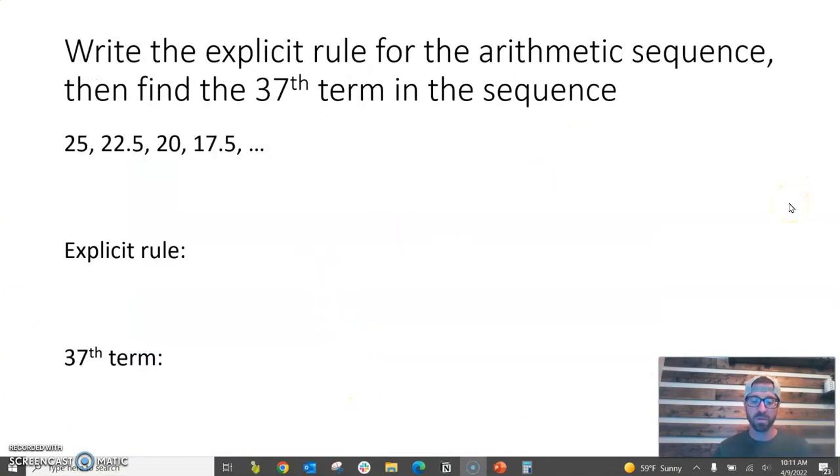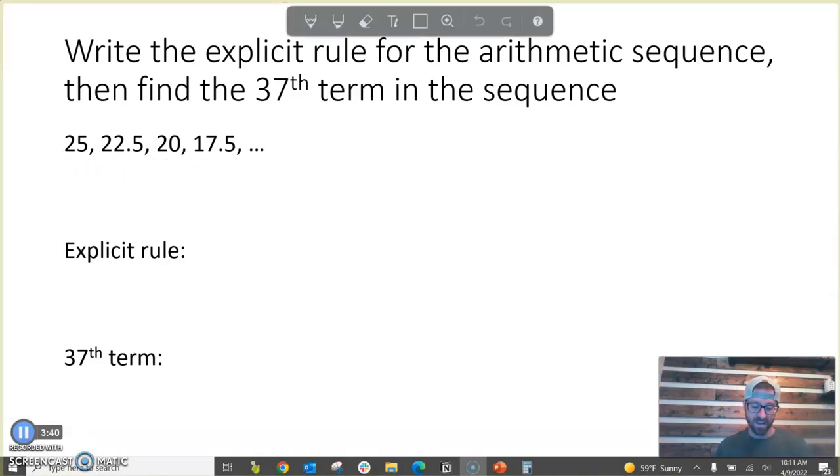So, we're going to use the explicit rule or we're going to write the explicit rule and then find the 37th term in the sequence. Well, if we look at our sequence right here, this is an arithmetic sequence. It looks like it's going down by 2.5 every time. And so, what we learned on our last slide is that to find our explicit rule, we start with our first term plus our common difference times n minus 1.